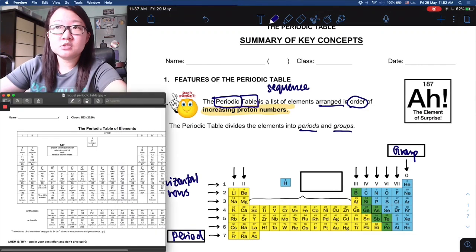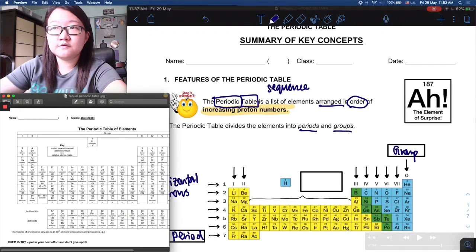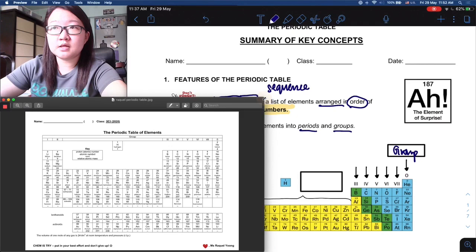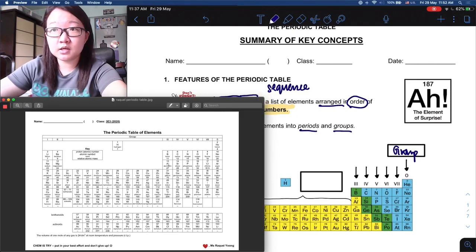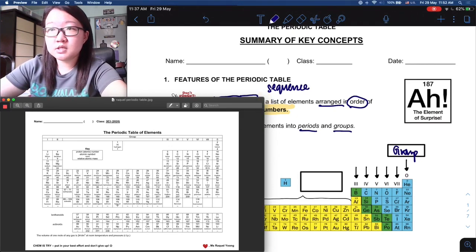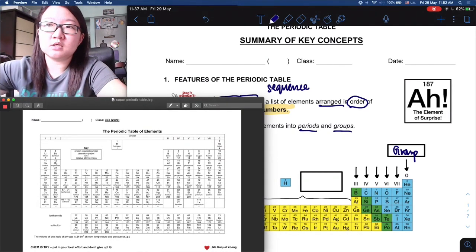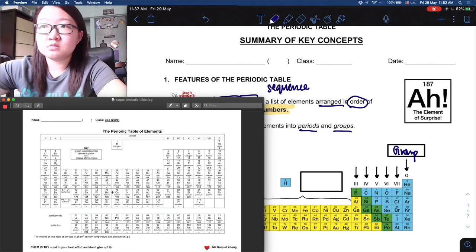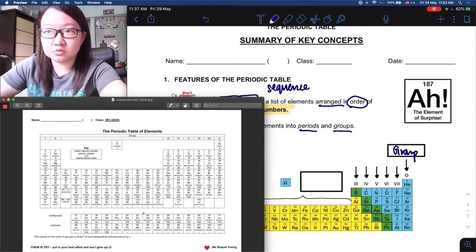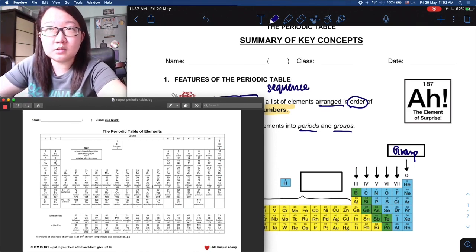If you look at your periodic table, right in the middle, the middle block, you will realize that these do not fall under any groups. These elements have a special name - they are called transition metals. So if you look at this over here, you notice that there is this chunk here that does not fall into any group.